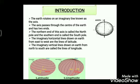The imaginary vertical lines drawn on earth from north to south are called the lines of longitude. These longitudes divide the earth into two parts — the eastern hemisphere and the western hemisphere. They are also known as the meridians of longitude.